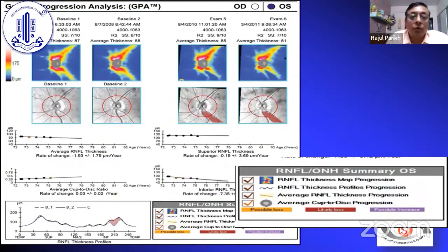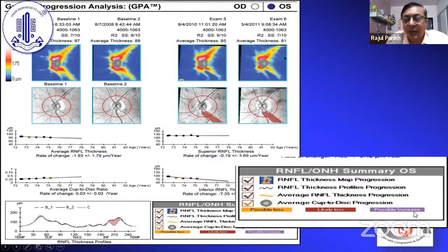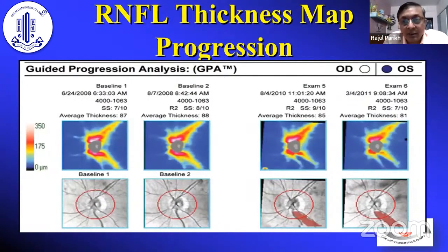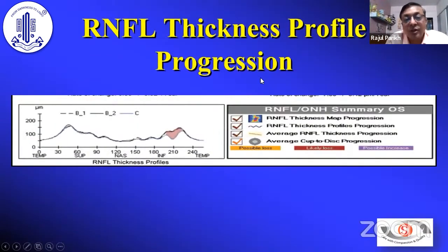This is how the OCT progression printout looks. Two baselines and subsequent fields are shown. Event-based analysis and trend-based analysis are displayed: yellow is possible loss, maroon-red is likely loss, and purple is possible increase — which usually doesn't happen in glaucoma. The RNFL thickness profile progression divides the area into 64 sectors; if four sectors show progression, it is marked as progression.